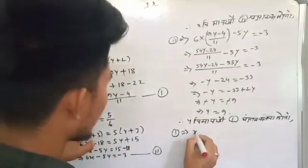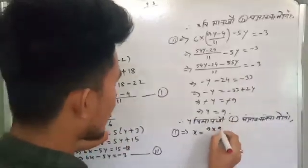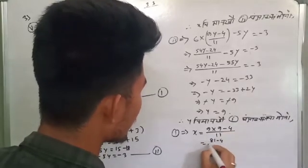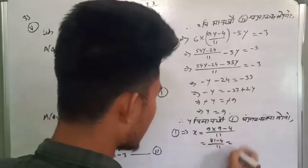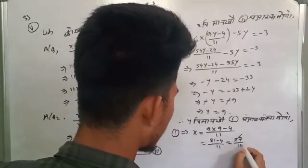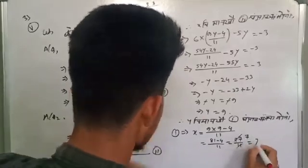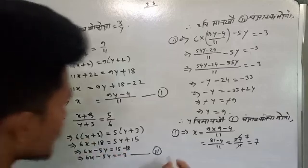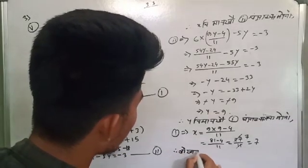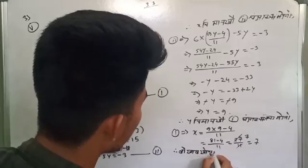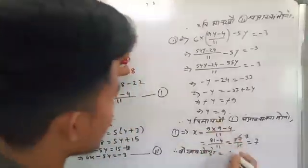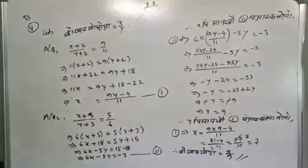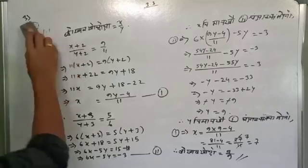So equation one: x is equal to 9y minus 4, divided by 11. So it is equal to 99 minus 4, divided by 11, which equals 77 by 11, so x is equal to 7. Therefore x is equal to 7 and y is equal to 9. So x by y is equal to 7 by 9.